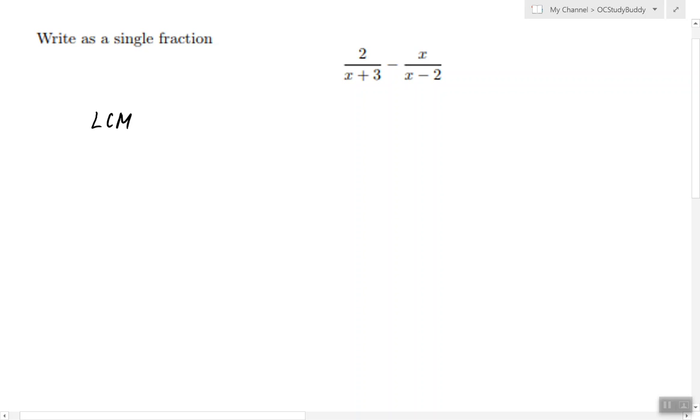So to find the common denominator we have to look at both denominators and find their least common multiple. Since they have nothing in common, that means their least common multiple is their product.